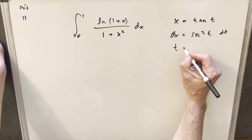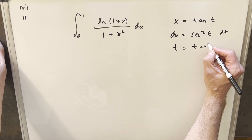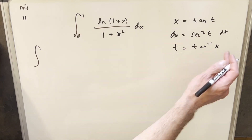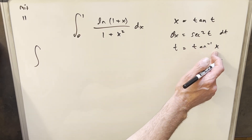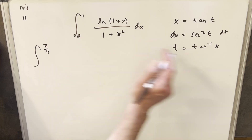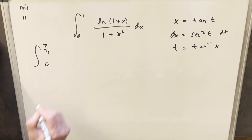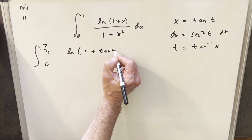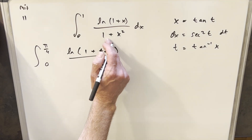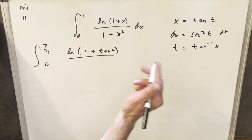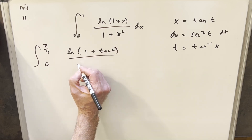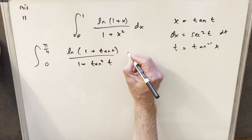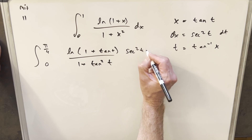Also, let's solve for our bounds: t is going to be the same as inverse tan or arctan of x. Making our substitution, we'll plug 1 in — arctan of 1 is pi over 4, and arctan at 0 is just 0. In the numerator we have natural log of (1 plus tan of t). In the denominator, 1 plus x squared becomes 1 plus tan squared t, and our dx becomes secant squared t dt.